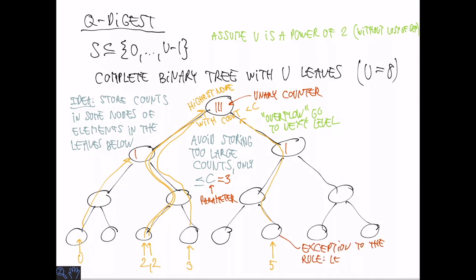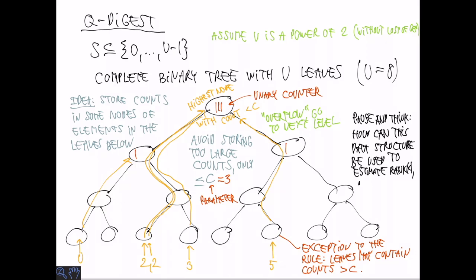One thing that can happen is that everything is full all the way down to the leaves. So we make an exception to the rules. Leaves may contain counts that are bigger than C. This is not a problem because for leaves we have exact information. We know exactly what this corresponds to. Now, I would like you to think about how this can be used to estimate rank of x and also what is the error in terms of C and U.